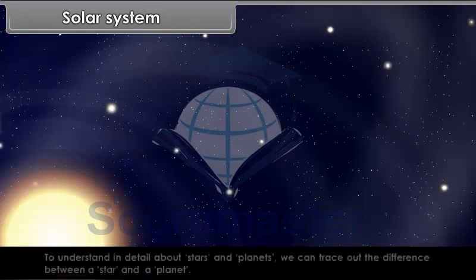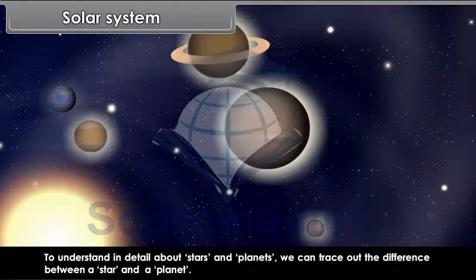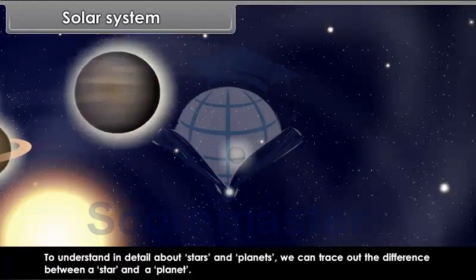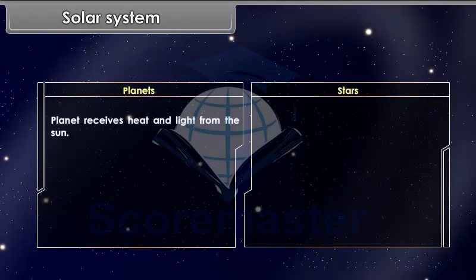To understand in detail about stars and planets, we can trace out the difference between a star and a planet. Planet receives heat and light from the sun. Star has its own heat and light.